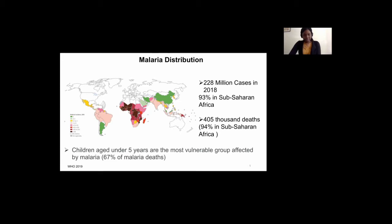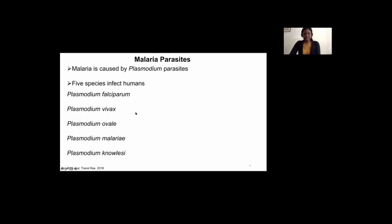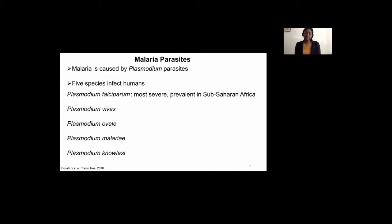One of the reasons why the burden of malaria is so high in sub-Saharan Africa, especially the death rates, is because the parasite that causes the most severe form of the disease is present in sub-Saharan Africa. Malaria is caused by parasites of the genus Plasmodium, of which five species are known to infect humans. Plasmodium falciparum causes the most severe form of infection and is prevalent in sub-Saharan Africa.